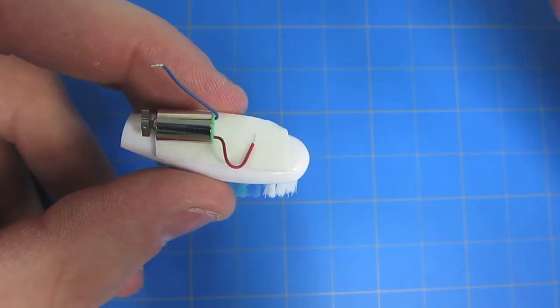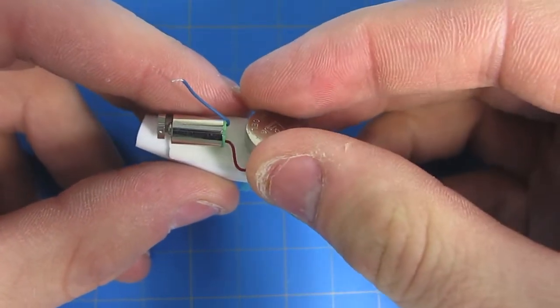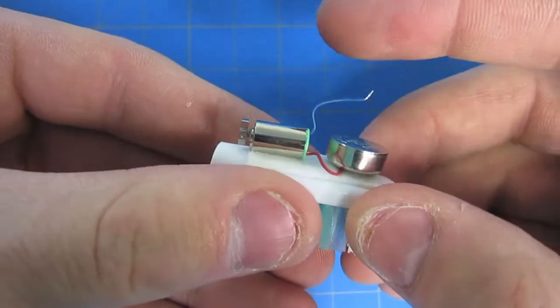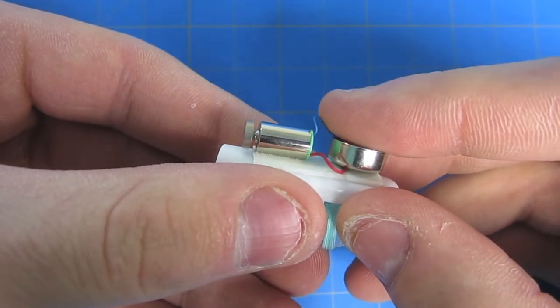Next, take your coin cell battery and put it so that the word side is face up and the bottom side is touching the first wire lead. You can use your finger to make sure that the contact is being made and the circuit is complete.